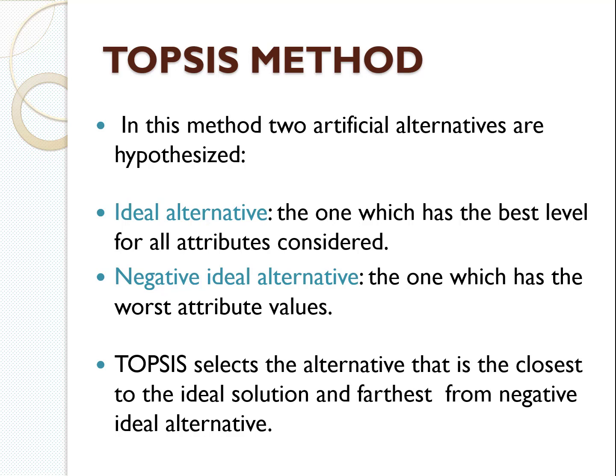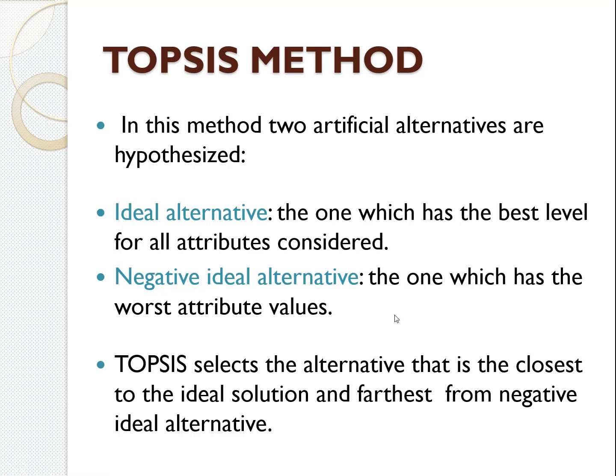The ideal alternative is the one where we maximize the benefit and minimize the cost, because this is the nature of every human being — he or she wants to get maximum utility, maximum facilities, maximum benefit while spending a minimum amount of money. The negative ideal alternative is the one which has the worst attribute values. TOPSIS basically selects the alternative that is closest to the ideal solution and farthest from the negative ideal solution. This is basically the mathematical formulation.